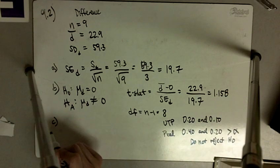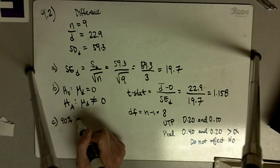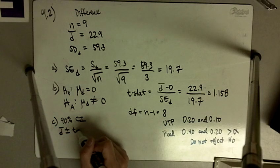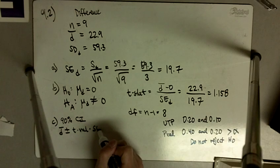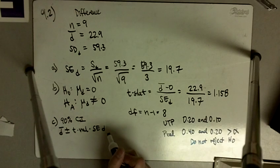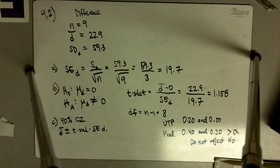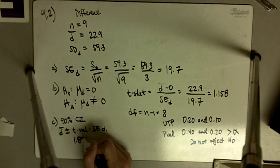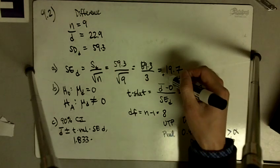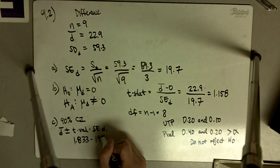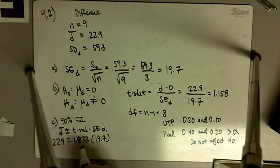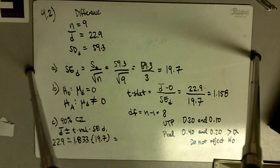C says create a 90% confidence interval. So our 90% confidence interval is centered around D bar plus or minus a T value multiplied by the standard error of the difference. So in this case, our T value for a 90% confidence interval with 8 degrees of freedom is going to be 1.833. Our standard error is from before, 19.7. And our D bar value is given to us, 22.9. That's from the table.